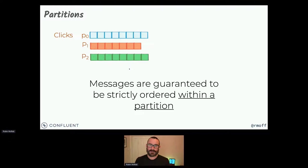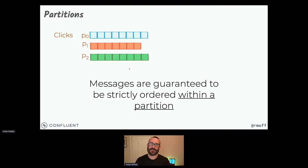We've got this immutability guarantee: when something gets written to that log, it cannot be unwritten. It might age out, and we'll talk about that later. But if you say something happened, it happened — it can't un-happen. You'd have to write another event to, in your business logic, counteract that first event. And we've got a guarantee around the ordering of messages as they enter a partition — you're guaranteed they'll be read out in the same order in which they were written to that partition.